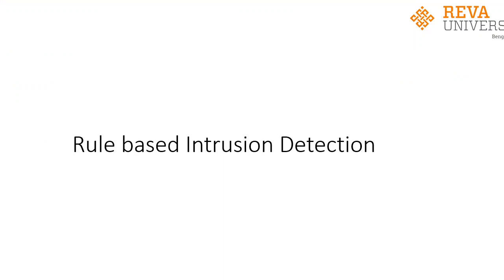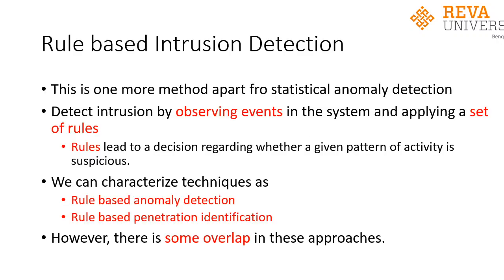We are going to look at rule-based intrusion detection in this session. We have already seen that in an intrusion detection system there are two types: one is statistical anomaly detection and the second one is rule-based intrusion detection system. In this case, intrusions are detected by observing events in the system and formulating a set of rules based on the observed events. These rules lead to a decision regarding whether the given pattern of current activity is suspicious or not suspicious.